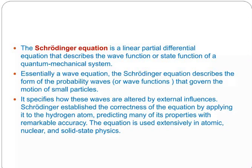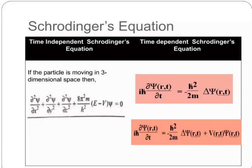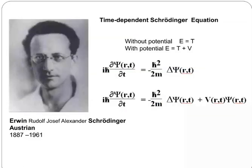This equation is used extensively in atomic, nuclear, and solid state physics. You can see time independent Schrödinger equation and time dependent Schrödinger equation. If the particle is moving in three-dimensional space, then you can see this is the equation. Time dependent Schrödinger equation without potential E equals T, and with potential E equals T plus V. You can see i h bar d psi r t by d t, h bar squared by 2m del squared psi r t.